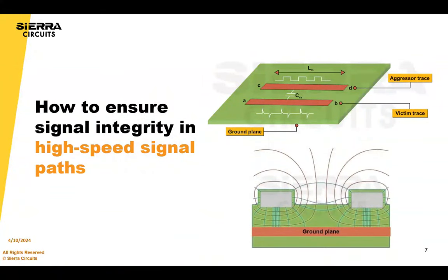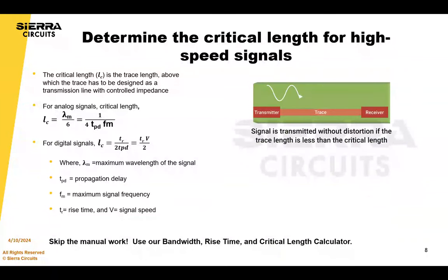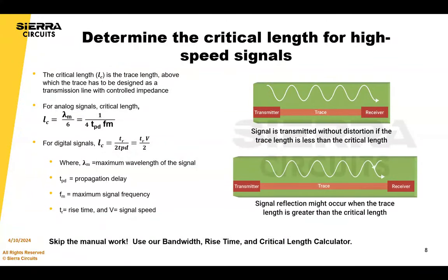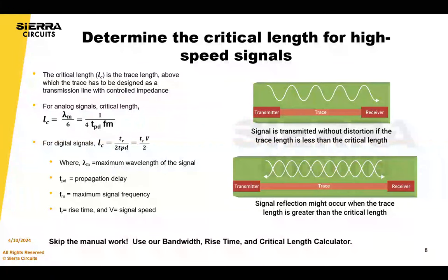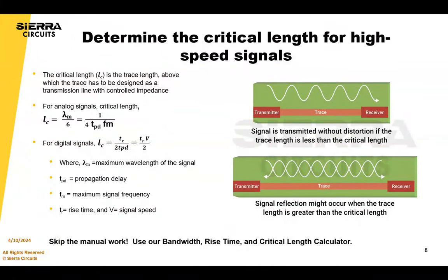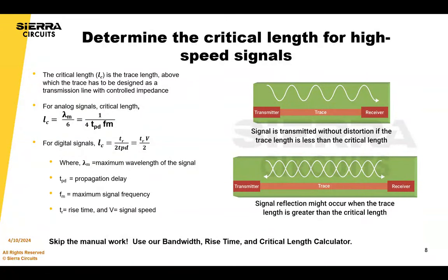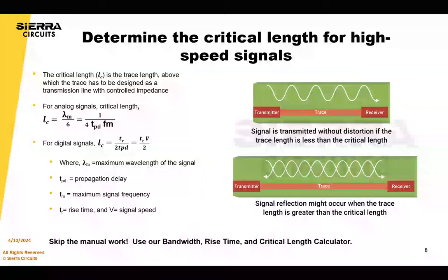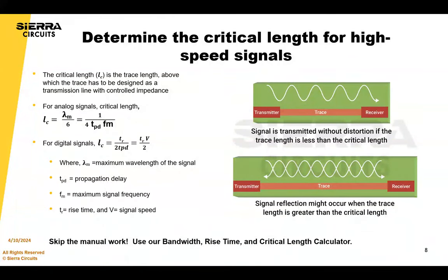How do you ensure signal integrity in a high-speed signal path? The first thing is to calculate your critical length — that's the trace length above which the trace has to be designed as a transmission line with controlled impedance. The signal is transmitted without distortion if the trace length is less than the critical length, and signal reflection might occur if the signal length exceeds the critical length. You can use these formulas to calculate the critical length of digital and analog signals.